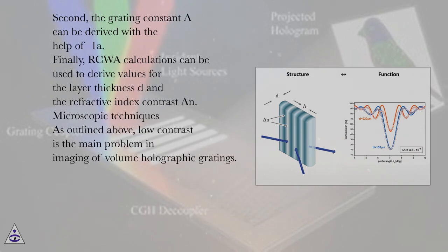Second, the grating constant lambda can be derived with the help of equation 1A. Finally, RCWA calculations can be used to derive values for the layer thickness D and the refractive index contrast delta N.